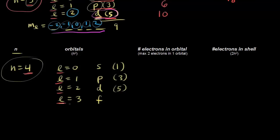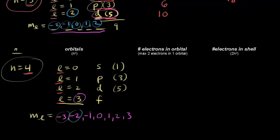For the f orbital, when l is equal to three, the allowed values for the magnetic quantum number go from negative l to positive l — so negative three, negative two, negative one, zero, one, two, and three: seven values total. So we have seven f orbitals in the fourth energy level.